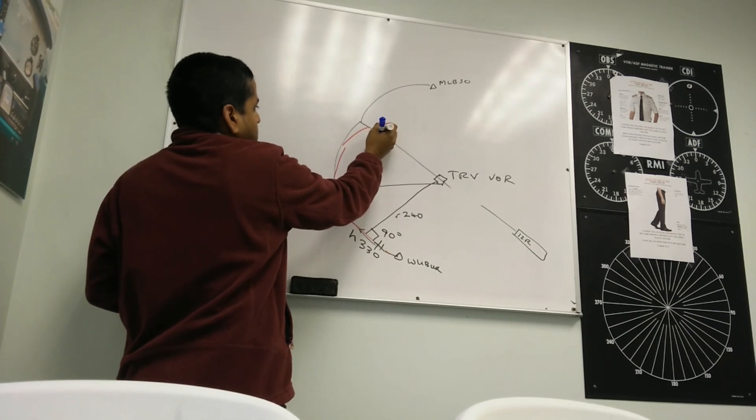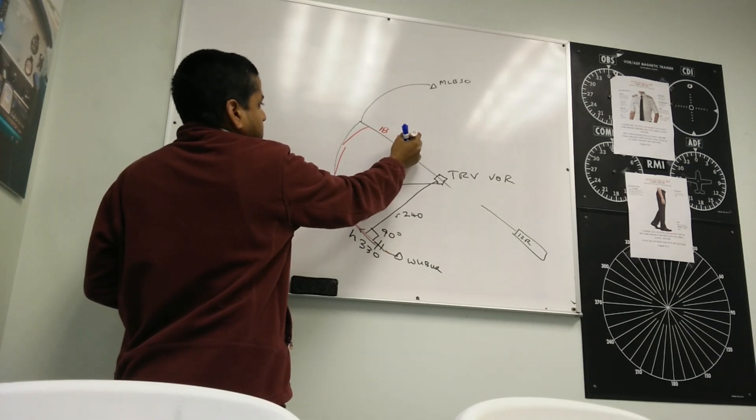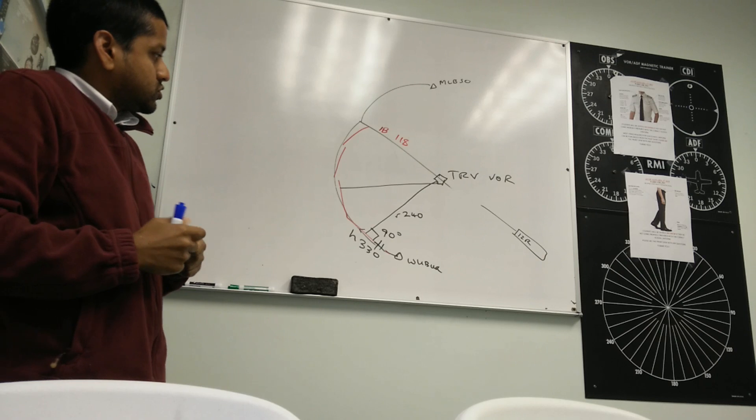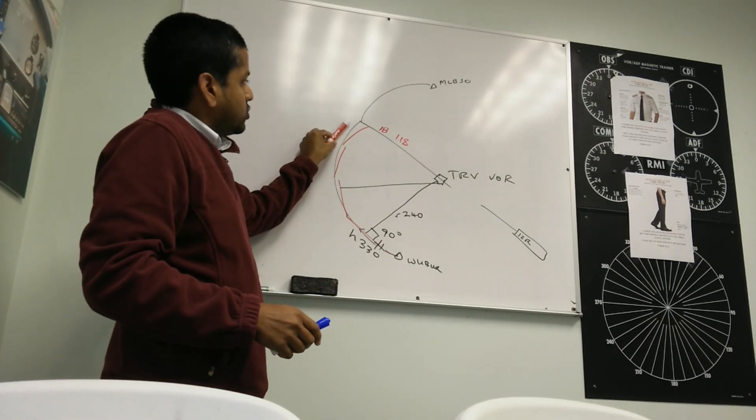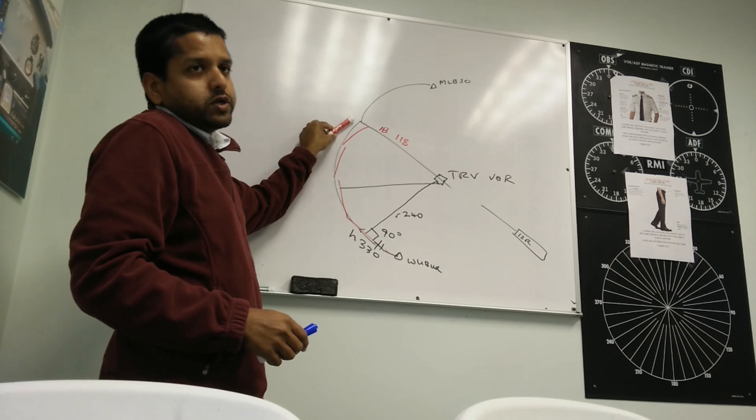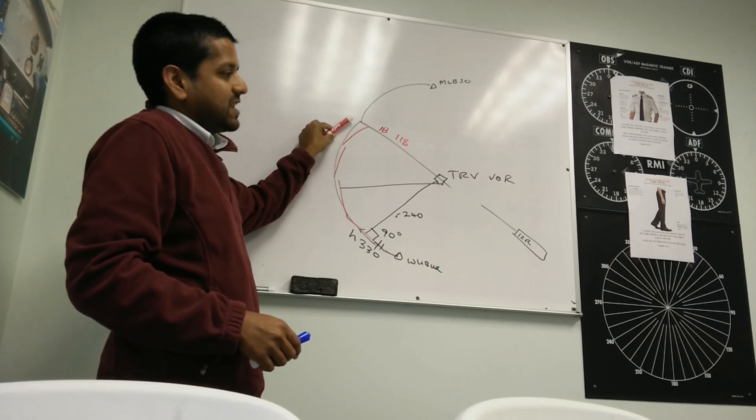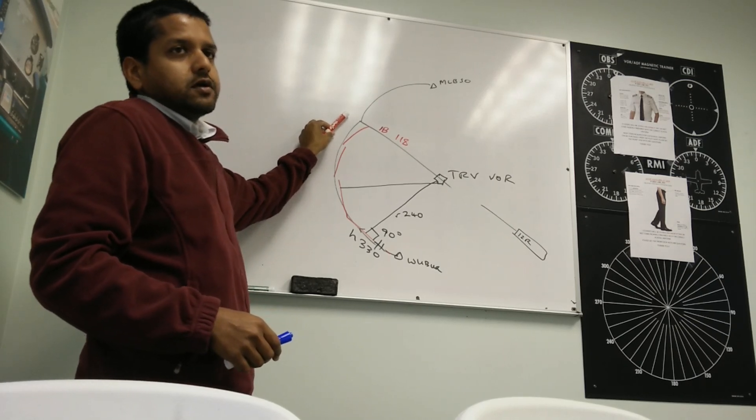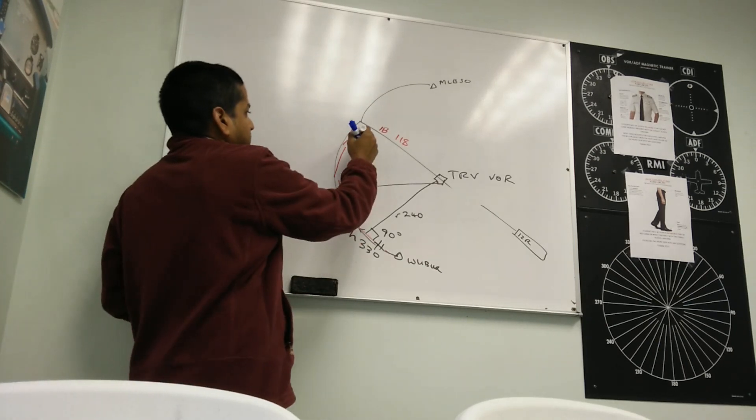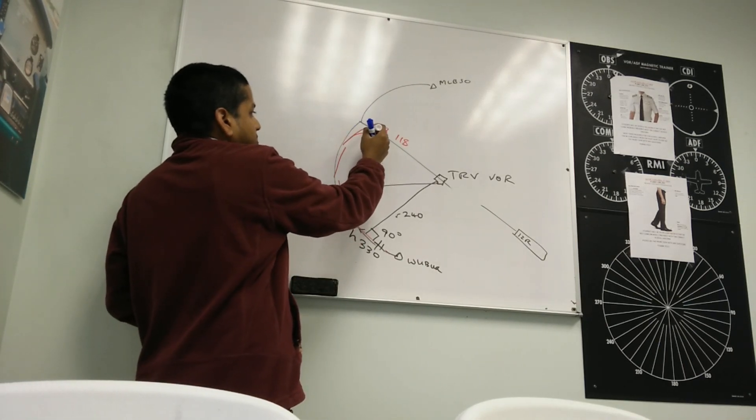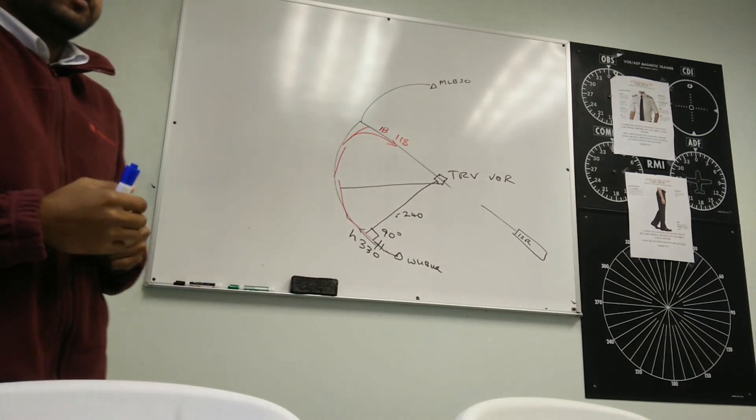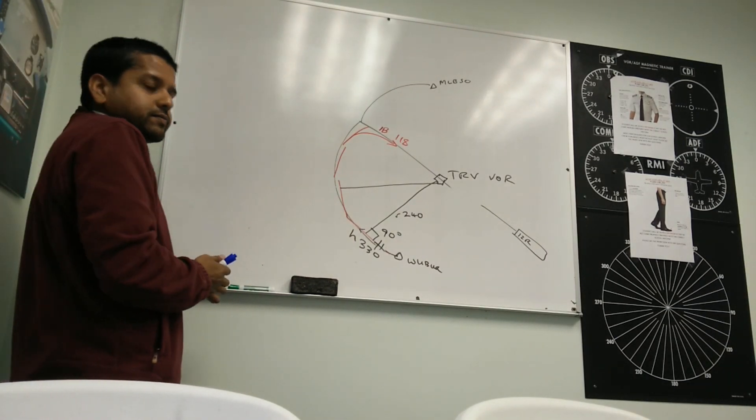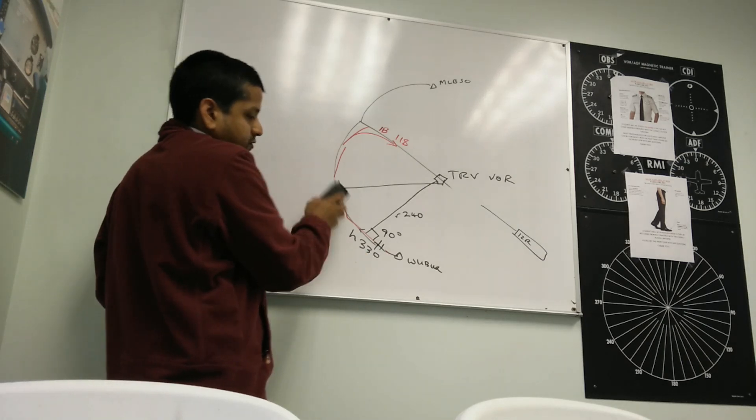This is your inbound. This is 118. So as you twist and turn, twist and turn, eventually you will be twisting to 118. That is your last twist. Do not twist past the final. And then, when you see the needle starting to center, you will turn inbound to intercept your final. So that is how we fly the arc.